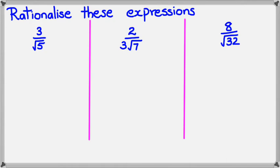So I'm going to start with the far left-hand one here, the one with 3 divided by square root of 5. Now obviously, if I want to make the denominator a whole number instead of having it as a surd, I need to actually multiply this fraction by square root of 5 divided by square root of 5.